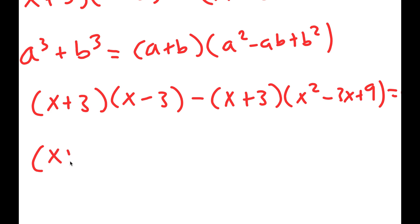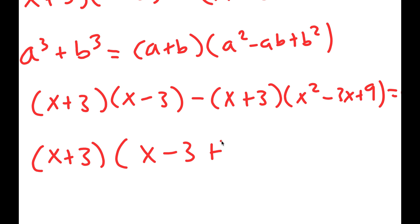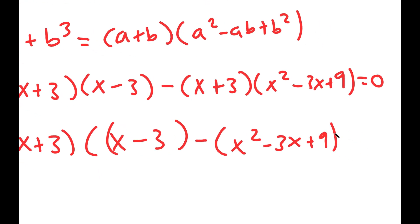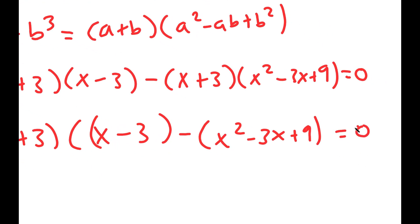And now if I factor out x plus 3, I get x plus 3 times the quantity x minus 3 minus x squared minus 3x plus 9, is equal to 0.